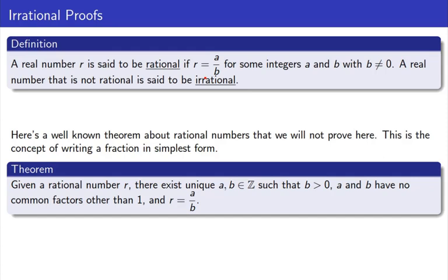Basically, the rational numbers are the decimals that can be written as fractions, and the irrational numbers are the ones that cannot.